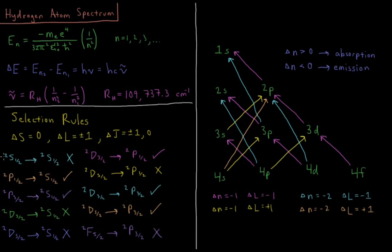So for our electronic states, which we represent by term symbols, which we discussed in the previous video, we can see that going from doublet S one-half to doublet S one-half would be not allowed because that is delta L equals zero. Going from S to S is not allowed.